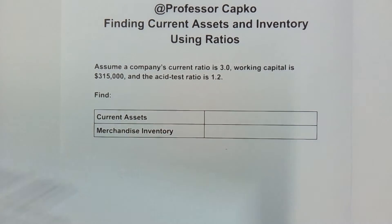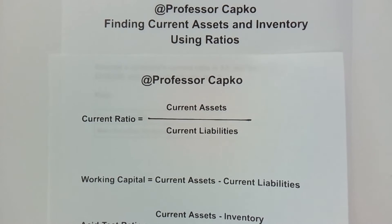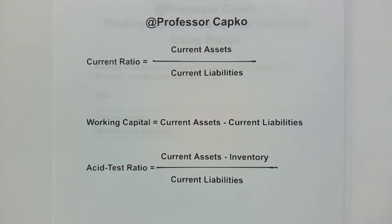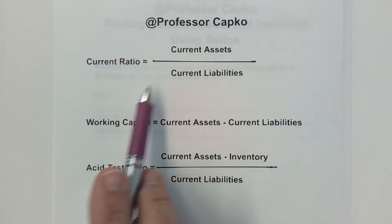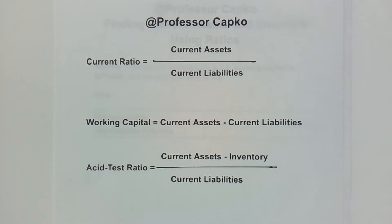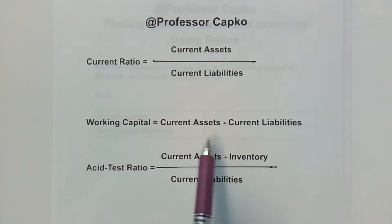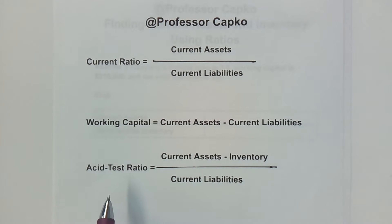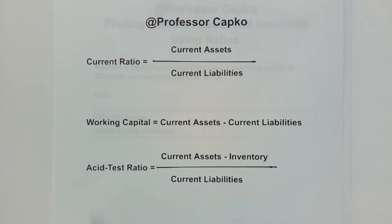Let's look at the formulas that I have for these items. We've got current ratio, which is current assets over current liabilities. We have working capital, which is current assets minus current liabilities. And we have the acid test ratio, which is current assets minus inventory over current liabilities. These are the formulas that we're going to need, and you'll want to keep them handy.